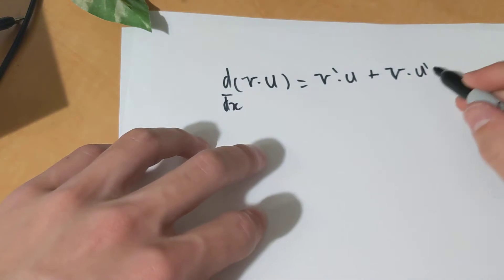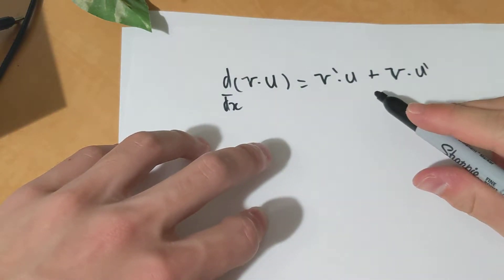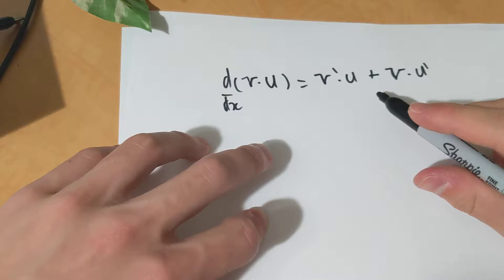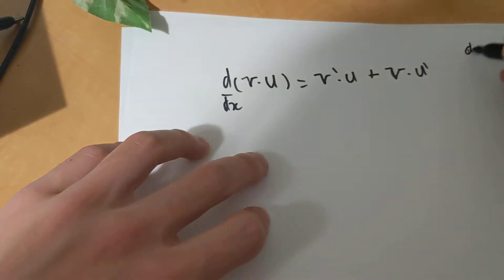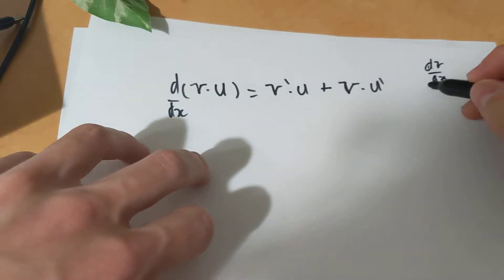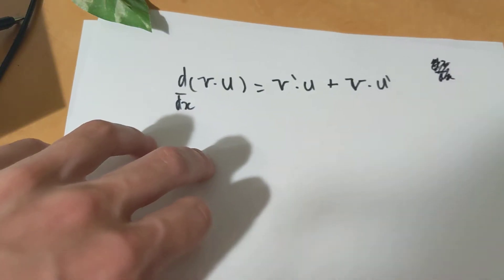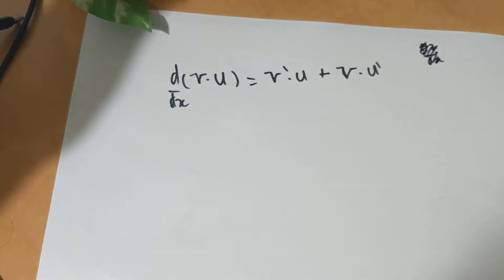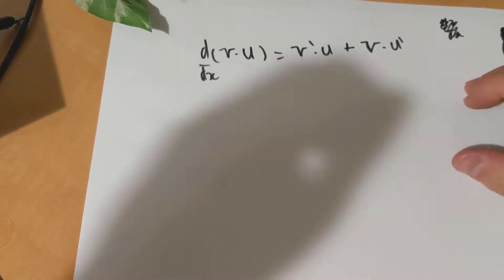This prime just represents the derivative. Maybe you've never seen the notation — I could have written dv over dx instead as the first derivative, but it's quicker and easier this way.